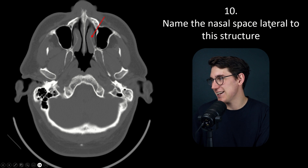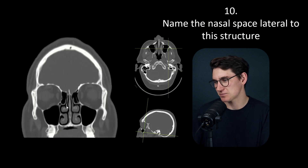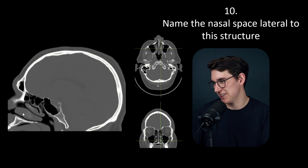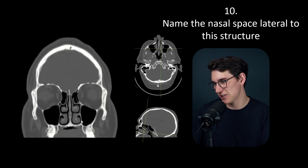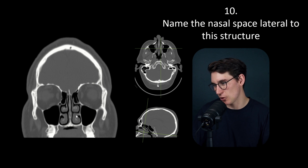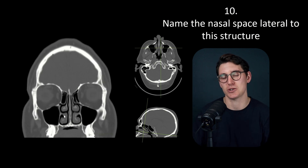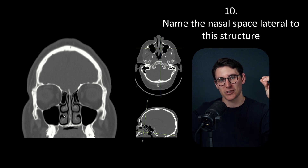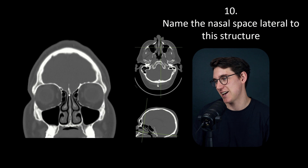Question 10 asks us to name the nasal space lateral to this structure — this dark space here. When looking at the nasal cavity, we distinguish turbinates (bone and soft tissue) from meati (the spaces). This is the inferior nasal meatus. We also get a middle nasal meatus and superior nasal meatus, each with different drainage. The superior nasal meatus receives fluid from the sphenoid sinus and posterior ethmoid air cells. The middle nasal meatus receives from the maxillary sinus, frontal sinuses, and anterior ethmoidal air cells. The inferior nasal meatus — our answer, the left inferior nasal meatus — doesn't receive fluid from any paranasal sinuses.